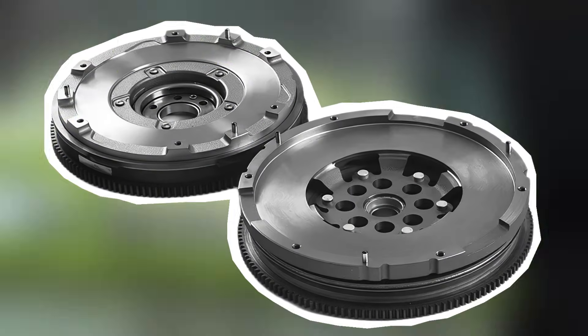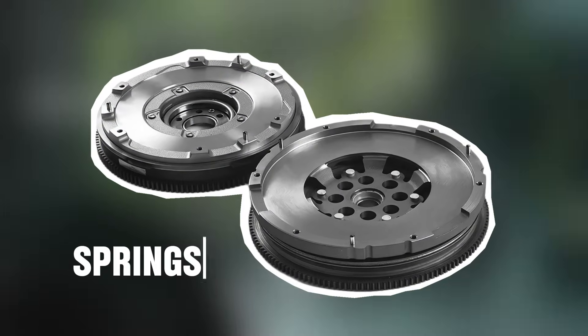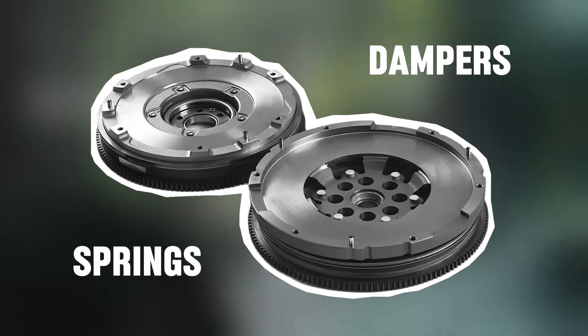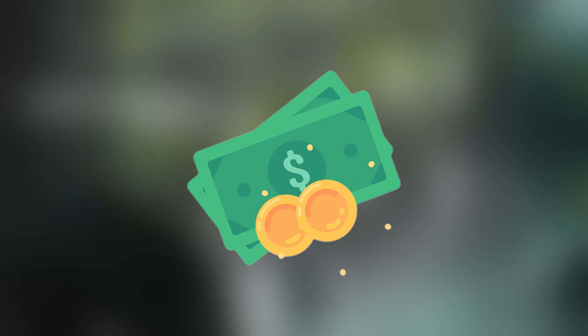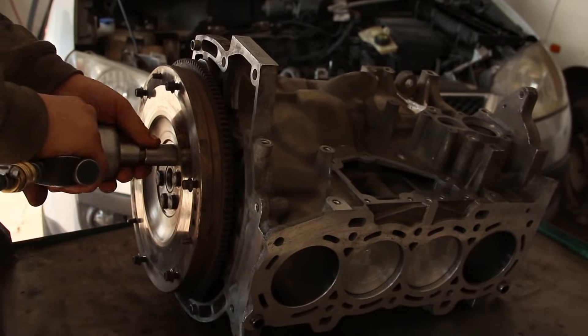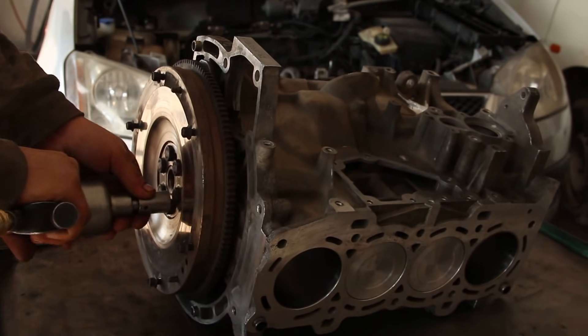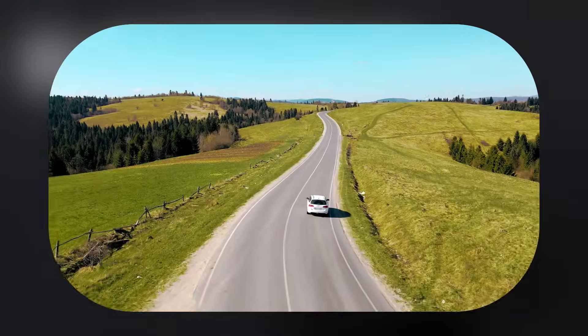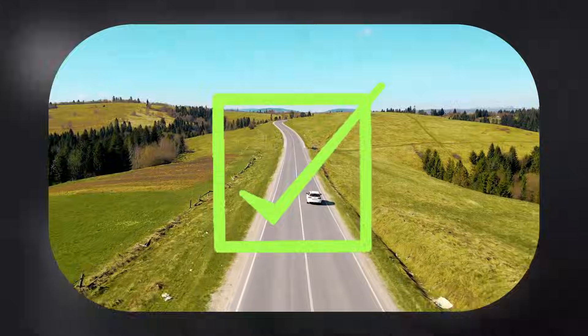In particular, dual-mass flywheels can wear out faster, since the springs and dampers inside them eventually break down. Replacing a flywheel isn't cheap. It usually requires removing the transmission, which means significant labor. But maintaining your clutch system properly and driving smoothly can help extend its life.